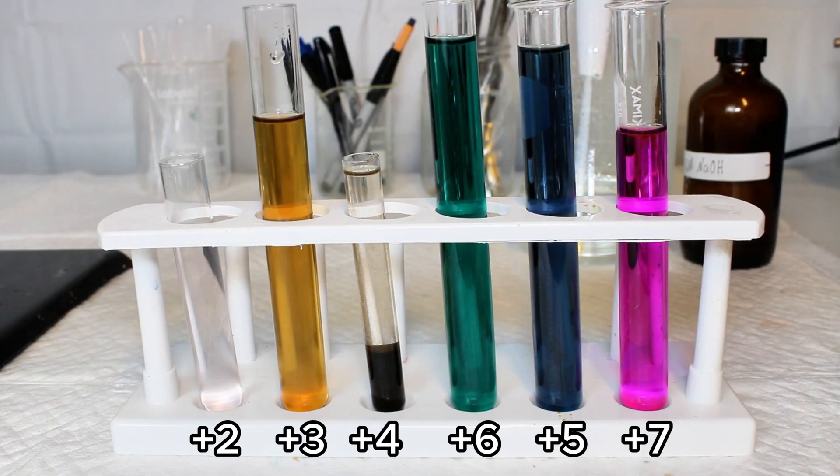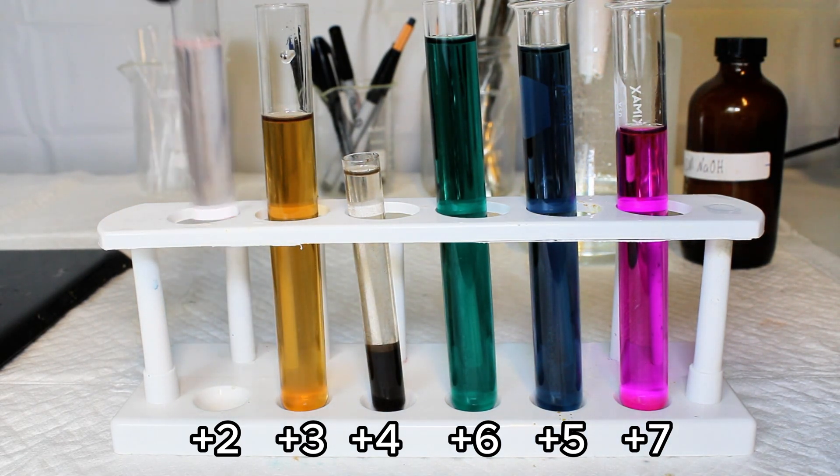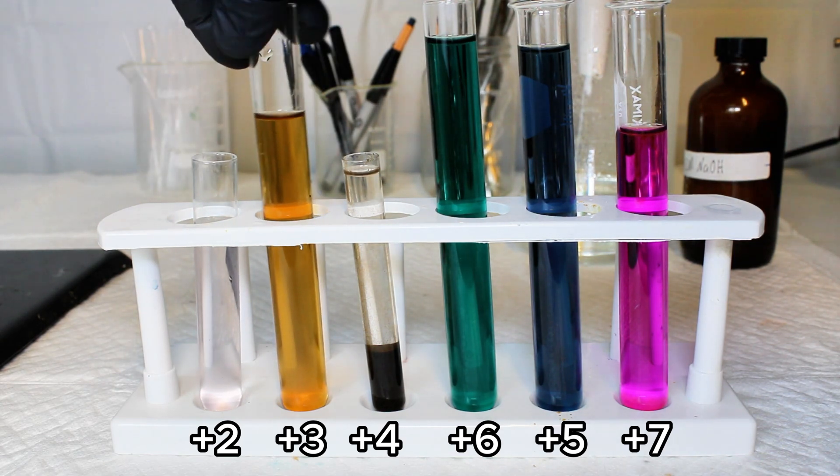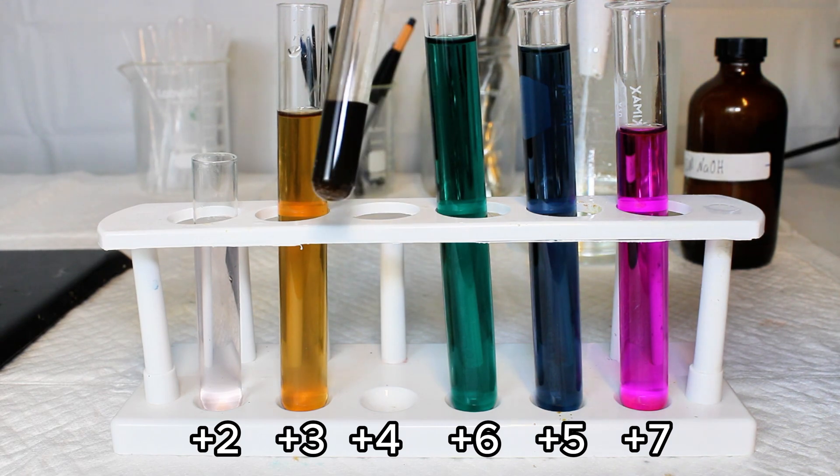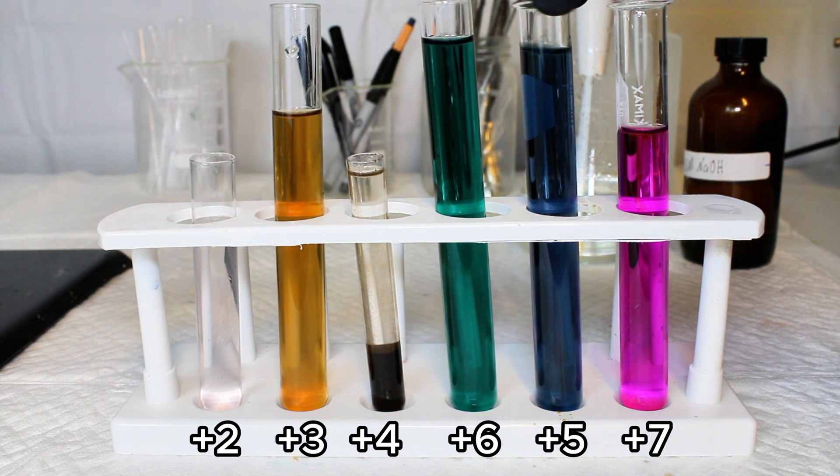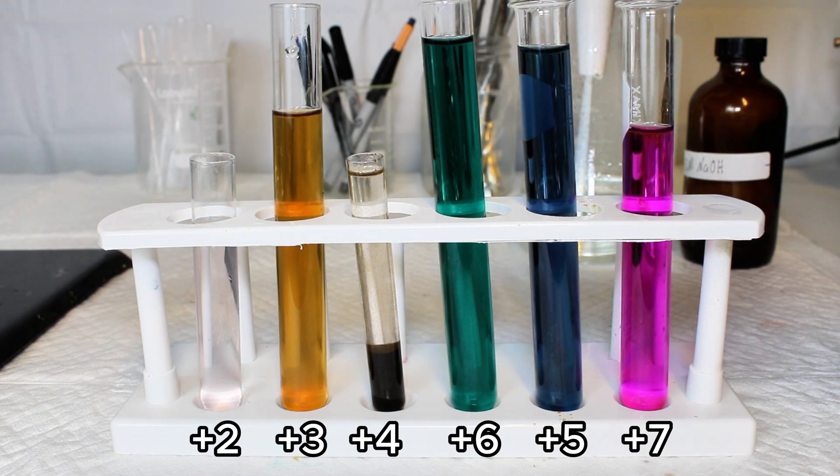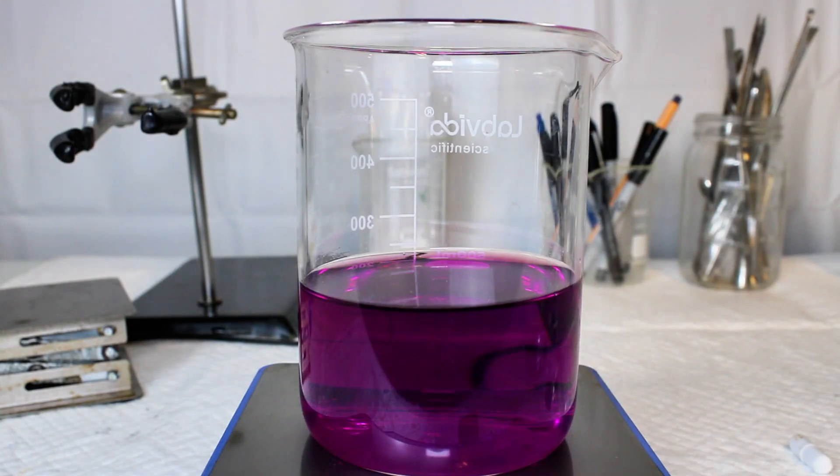So yeah, here is every manganese oxidation state from plus two to plus seven. Manganate and hypomanganate are out of order here as I was still somewhat unsure which was which when I was filming this. This uncertainty came from me just finding it odd that the plus five state formed before the plus six state when reducing permanganate, but it does seem to work that way with hypomanganate seeming to act as an unstable but entropically favored product.